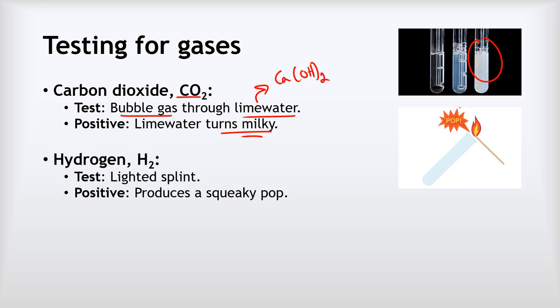The next test we've got is for hydrogen. And for this one we get a wooden splint and we light it, and then we stick it into a test tube of gas. And if that gas is hydrogen it produces a squeaky pop sound like this, which is actually a very small explosion as the hydrogen rapidly burns to form water.